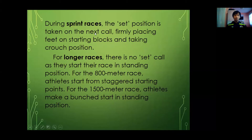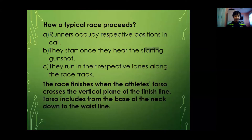We have 'on your mark,' then the set position. How a typical race proceeds: runners occupy their respective positions before the starting line. Upon the gunshot, they start running — following 'on your mark,' 'set,' then bang! They run in their respective lanes along the race track. For sprinting, you run in your respective lanes.